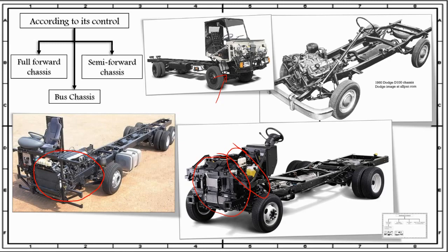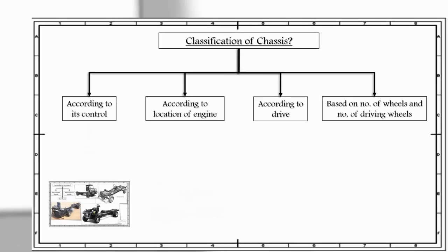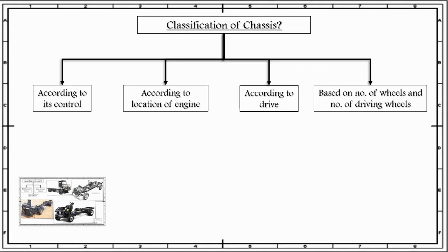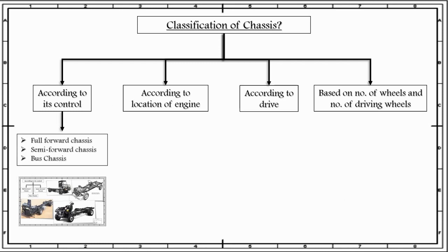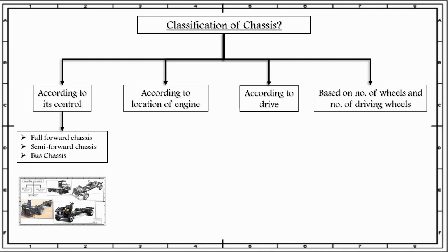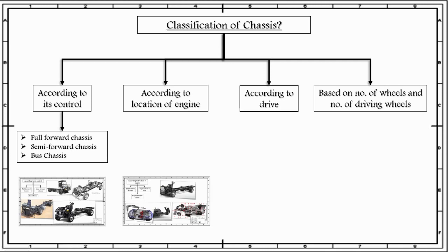Going back to our classification, so far we have discussed that chassis can be classified according to its control, with types being full forward chassis, semi-forward chassis, and bus chassis. Now, the second type of classification of chassis is according to the location of the engine.